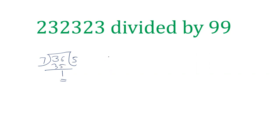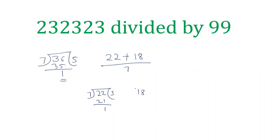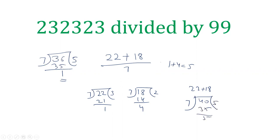Now if there are two numbers given in addition, for example 22 plus 18 divided by 7. Find out the remainder: 22 divided by 7 gives remainder 1 (since 7 threes are 21), and 18 divided by 7 gives remainder 4 (since 7 twos are 14). So the final remainder is 1 plus 4, which is 5. You can verify: 22 plus 18 is 40, and 40 divided by 7 also gives remainder 5. So either you add the numbers or individually find the remainders — the sum of the remainders will be the answer.